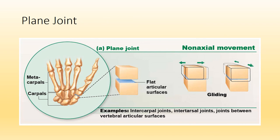The first type of synovial joint is a plane joint — think about that gliding or sliding movement in one plane. Examples include intercarpal joints between the carpal bones in the wrist, intertarsal joints between the tarsal bones in the ankle, and the joints formed at the vertebral articular processes.